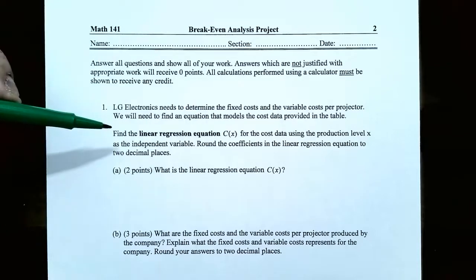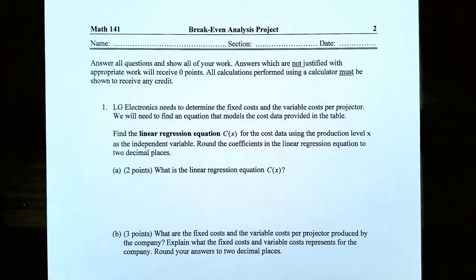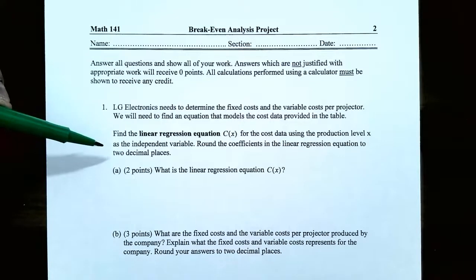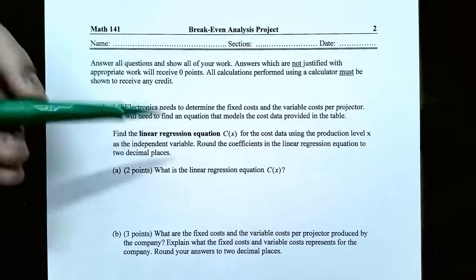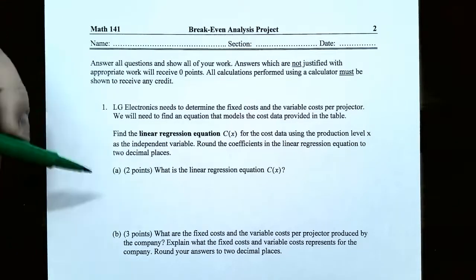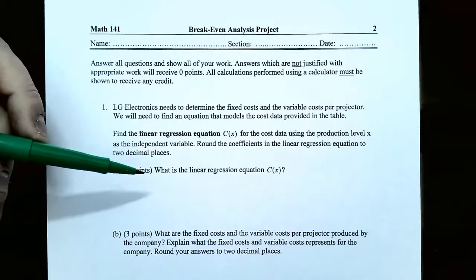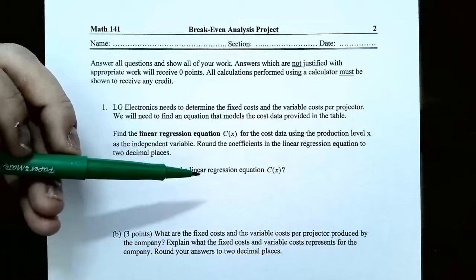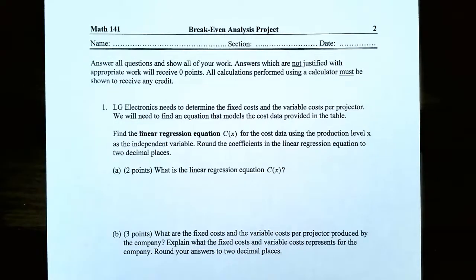Find the linear regression equation C of x for the cost data using the production level x as the independent variable. Round the coefficients in the linear regression equation to two decimal places. So part A: what is the linear regression equation C of x? Whether you've done linear regression before or not, I'm going to show you the steps on how to calculate it. Since the production level is represented as x, the first column of the data table represents the x values and the cost represents the y values or the dependent variable.